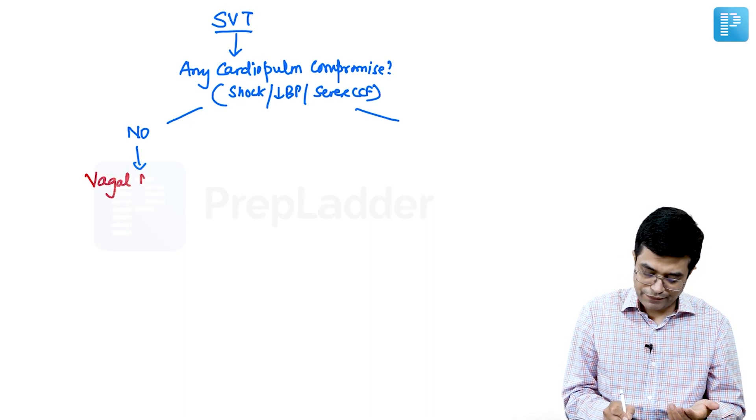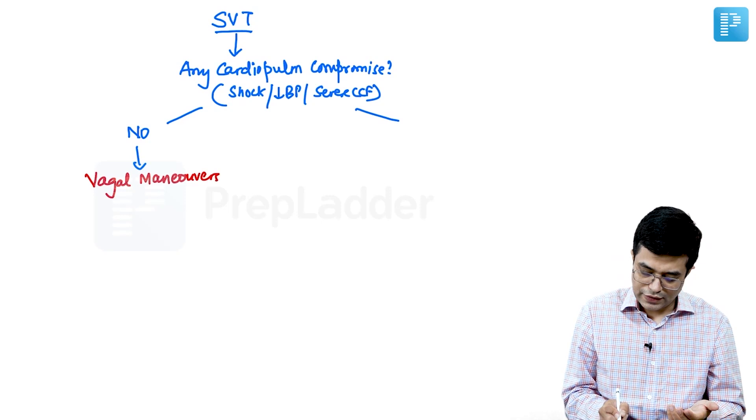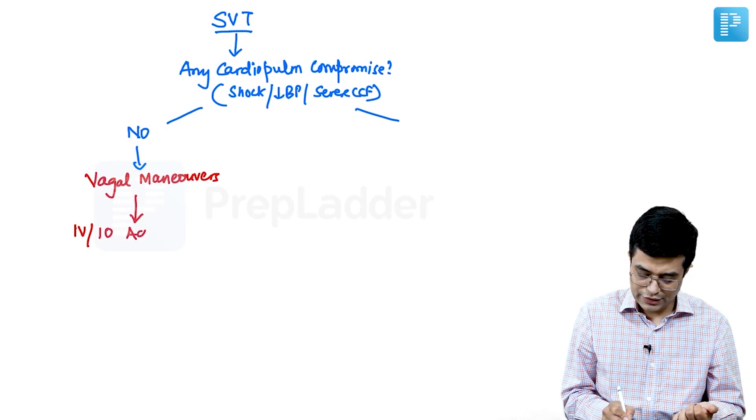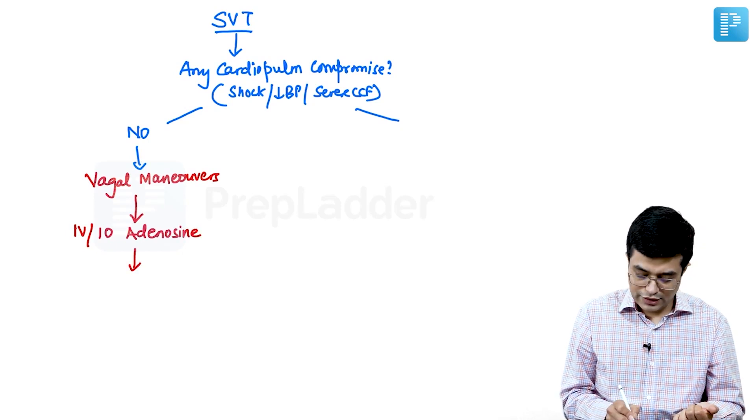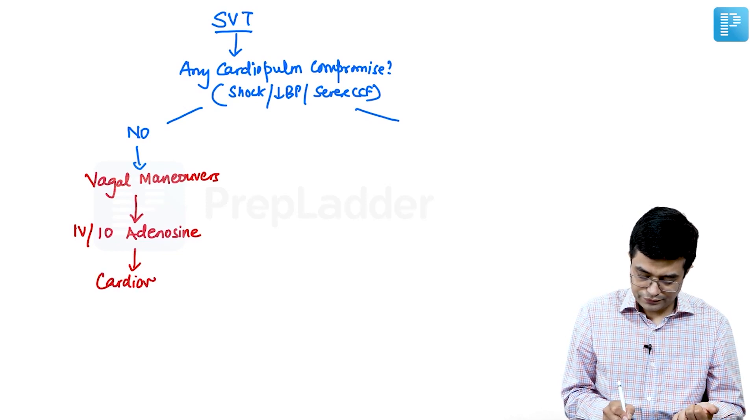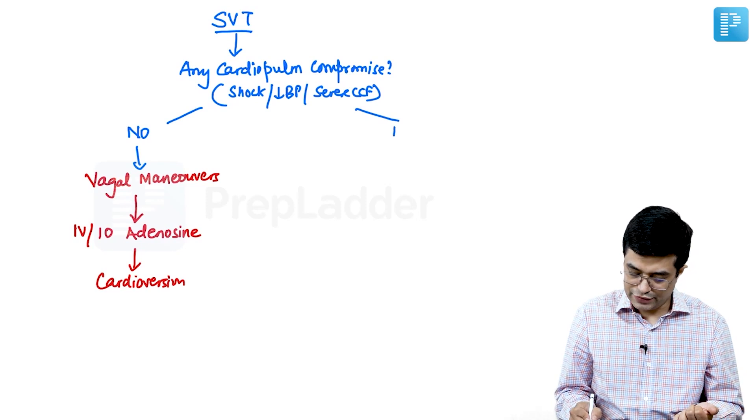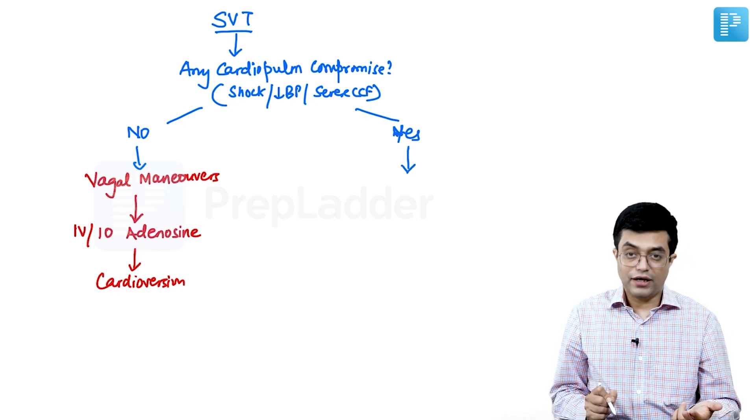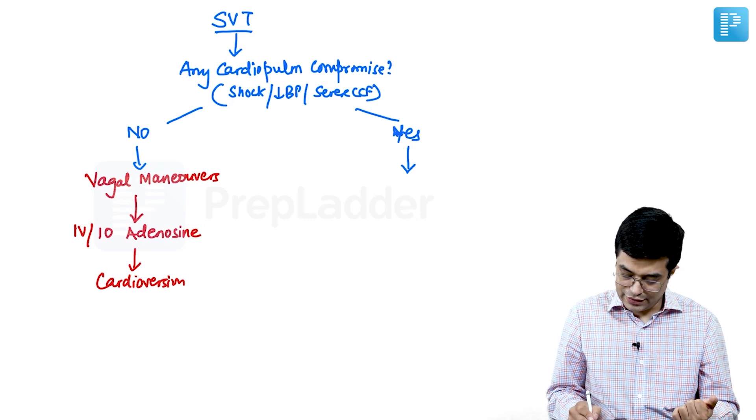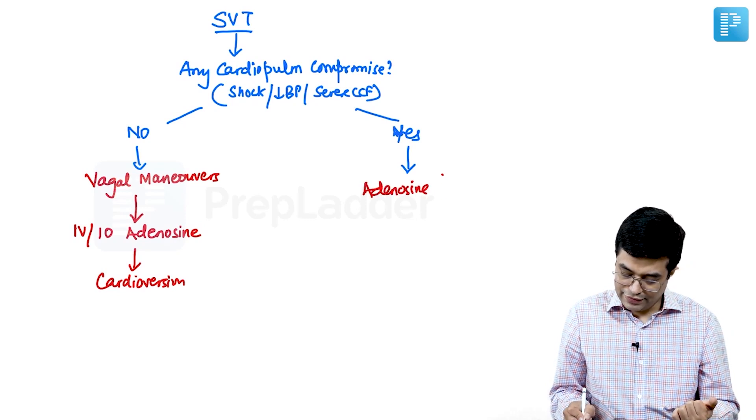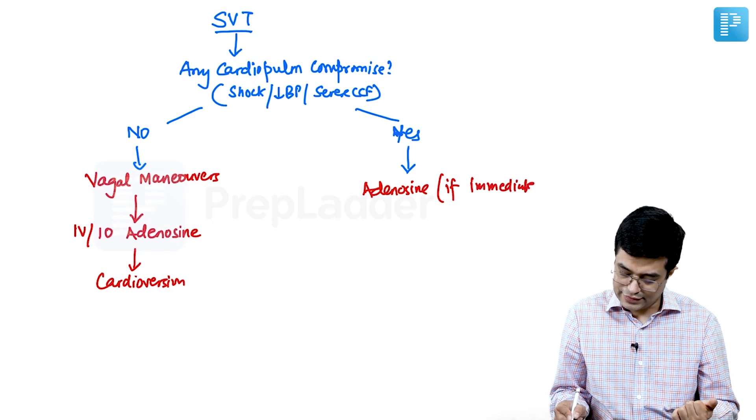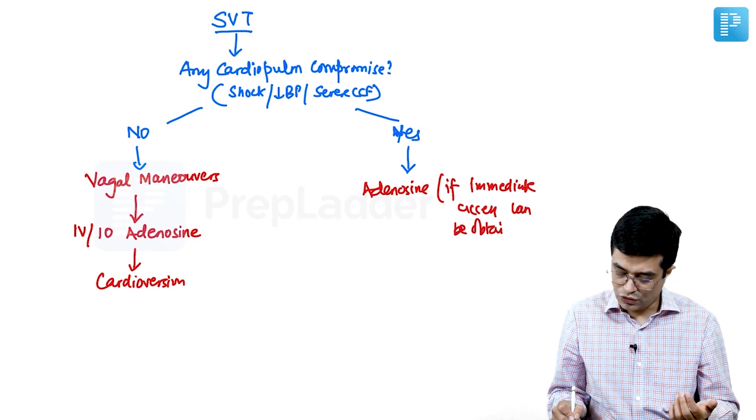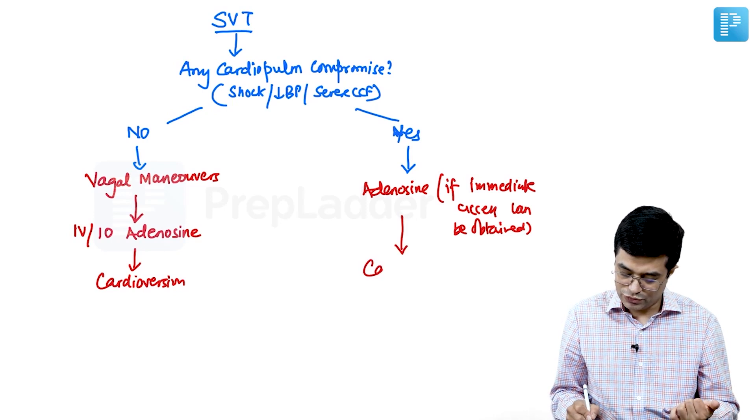And in case vagal maneuvers fail, then you will go in for IV or intraosseous adenosine in the patient. And if that also fails, then you will go in for cardioversion. On the other hand, if the patient is already having shock here or low BP or severe CCF is there, these are considered to be unstable patients. You will give IV adenosine if immediate access to vascular system can be obtained. If that is not possible, you will not waste any time and you will directly go in for cardioversion.